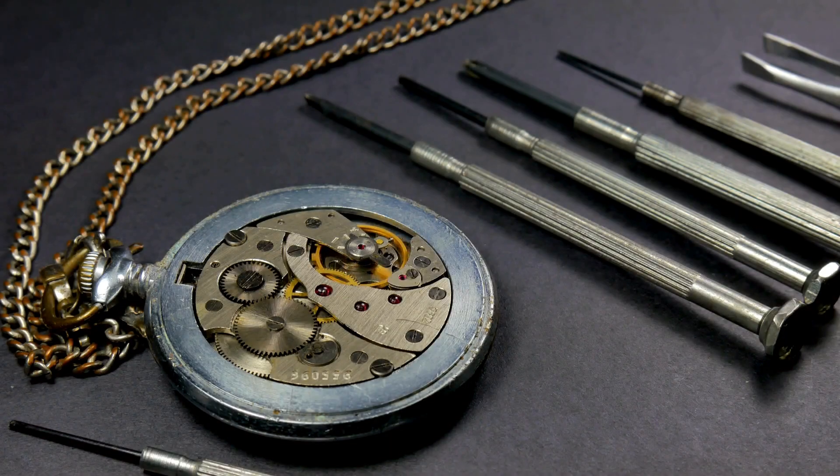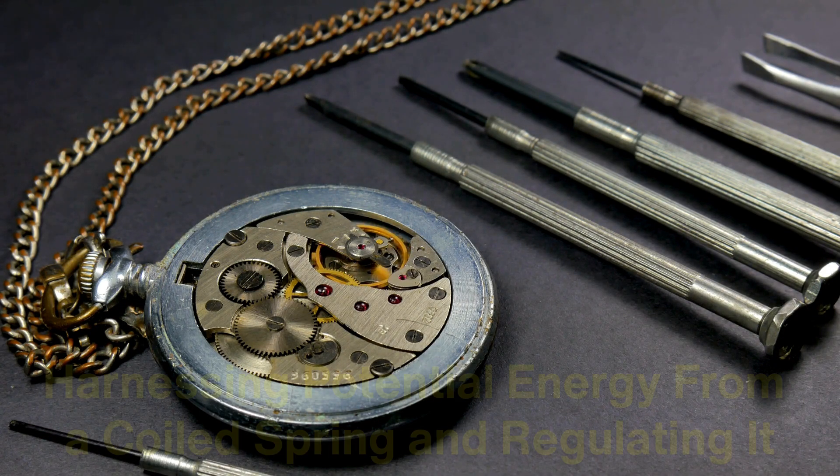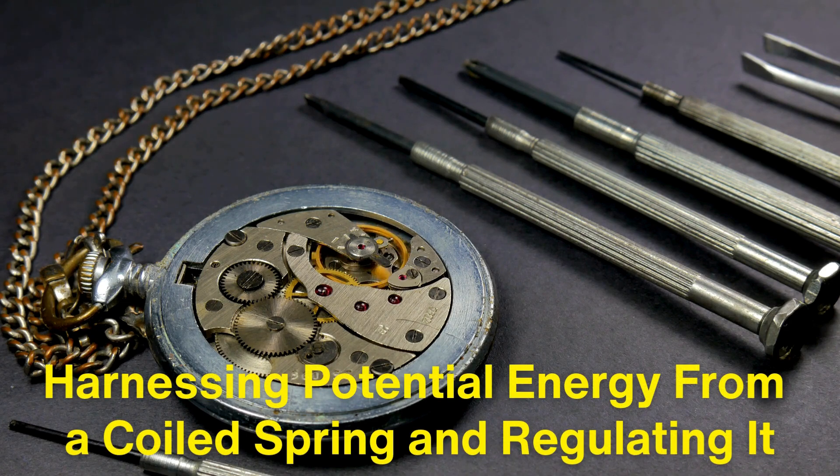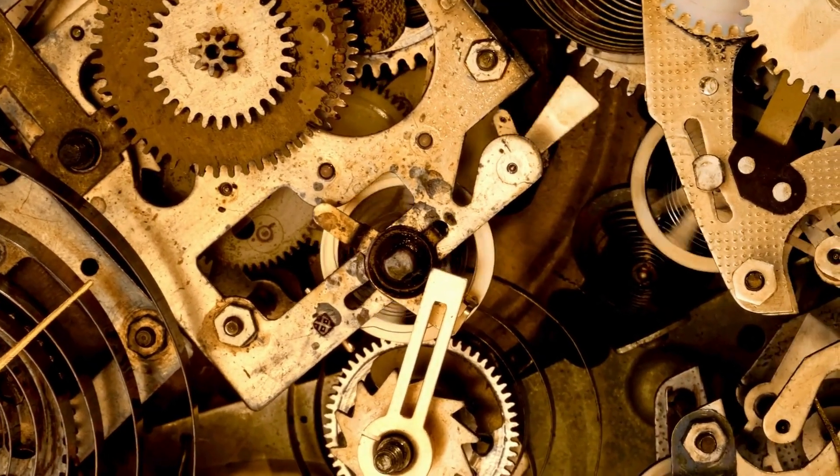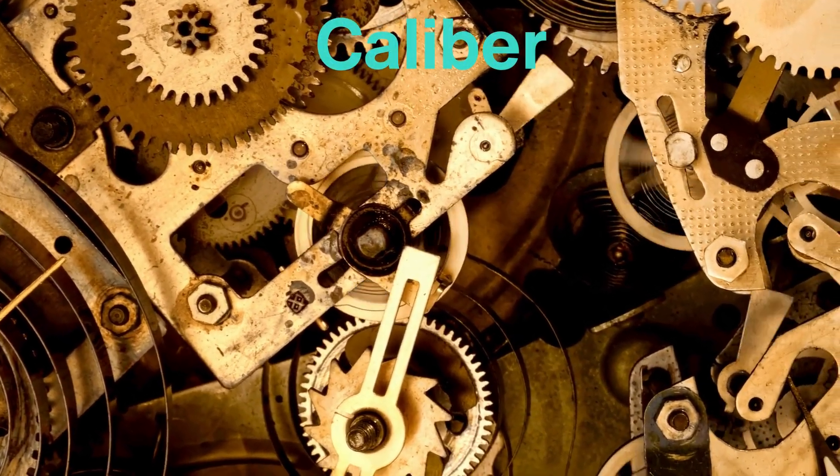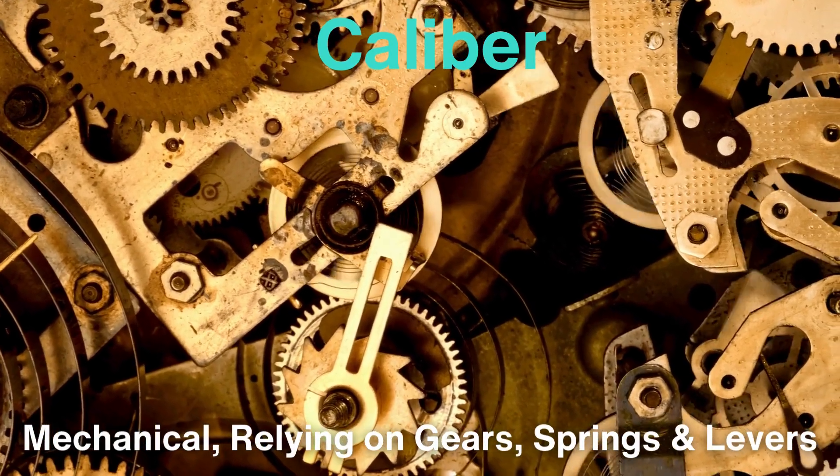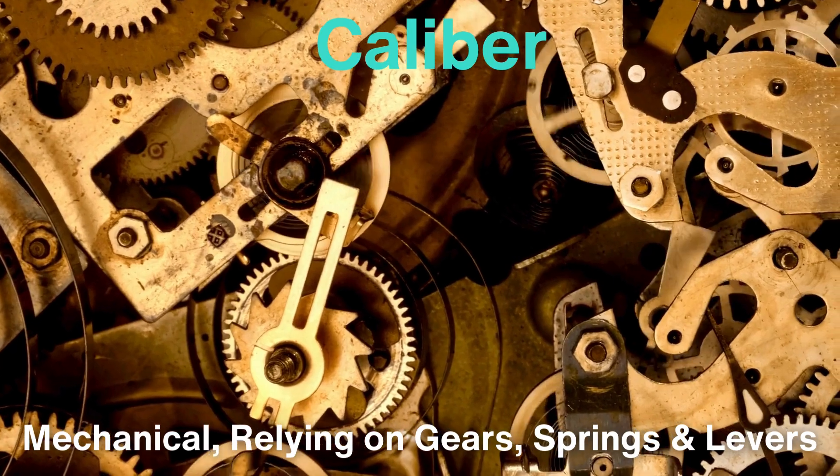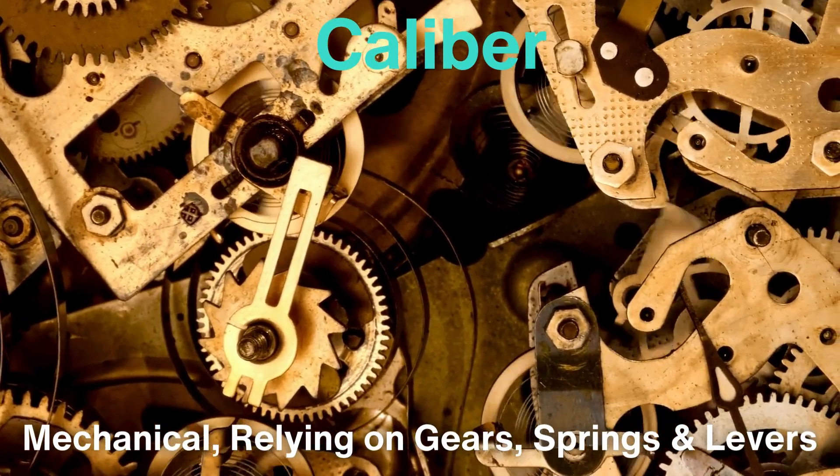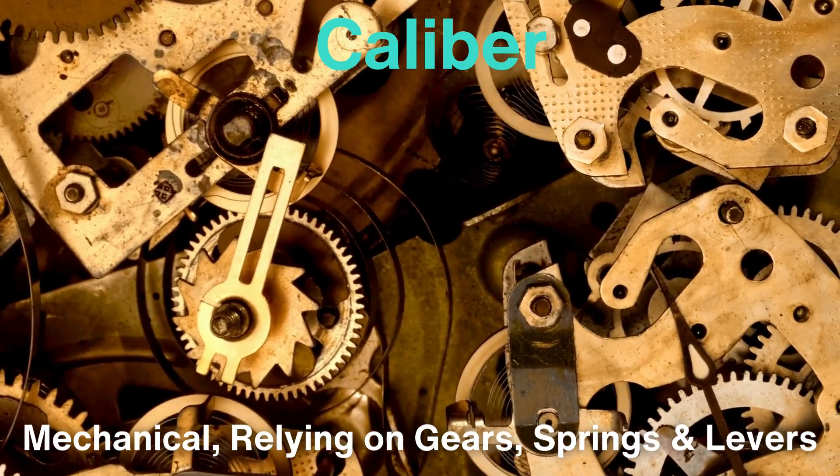At the heart of every mechanical watch is an elegant but simple concept, harnessing potential energy from a coiled spring and regulating it in such a way that time is kept accurately. The watch's movement, often referred to as the caliber, is entirely mechanical, relying on gears, springs, and levers, all of which work together to turn stored energy into motion. This mechanism eliminates the need for a battery.